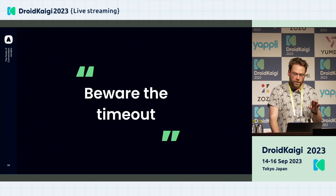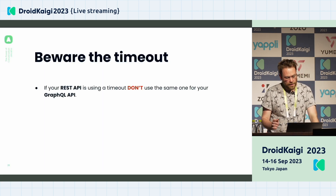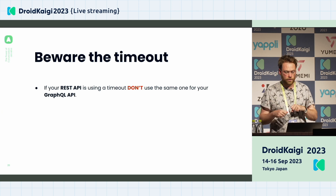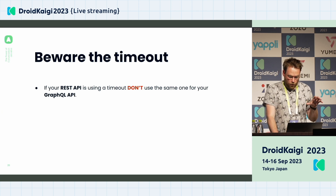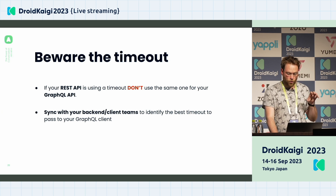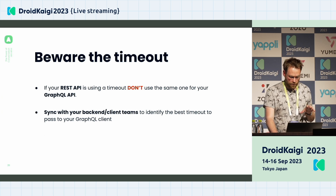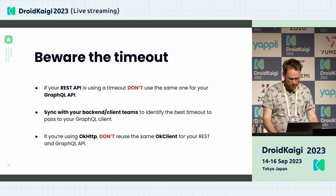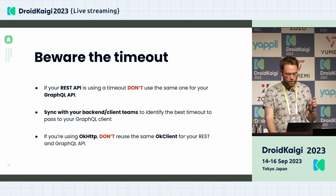Second point: beware the timeout. If you are in a current migration and using your REST API alongside your GraphQL API, don't use the same timeout for both. Synchronize with your backend team and other client teams to identify the best timeout to pass for the GraphQL clients, because the implementation may be different. If you're using OKHttp, don't reuse the same client for REST and GraphQL — use one for each implementation.